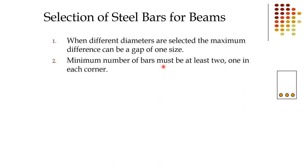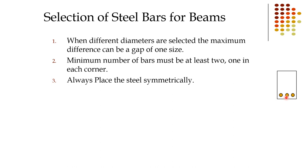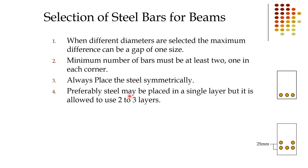When different diameters are selected, the minimum number of bars must be at least two — one in each corner of the beam. Always place steel bars symmetrically. Steel is preferably placed in a single layer, but two or three layers are permitted. A clear gap of 25mm must be provided between layers.